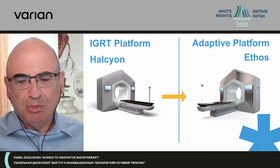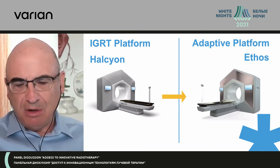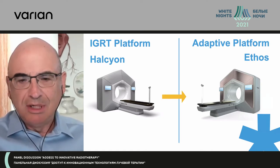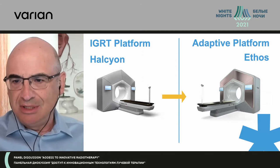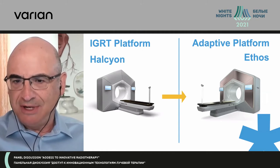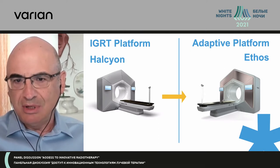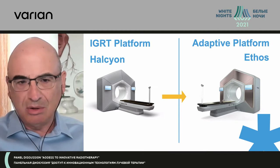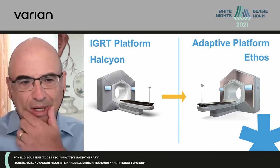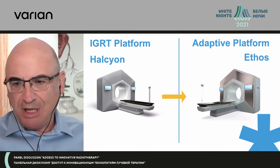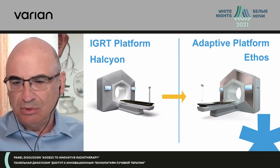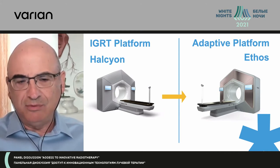You must know that we have a platform called Halcyon. Ethos is essentially the same platform, but with a significant addition of software tools that enables online adaptive radiation therapy. I'll go over the steps to do that, and all of the Halcyon platforms that we have are upgradeable to the Ethos platform.